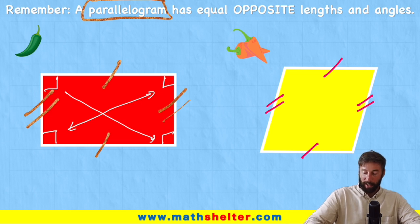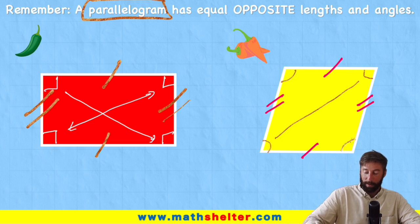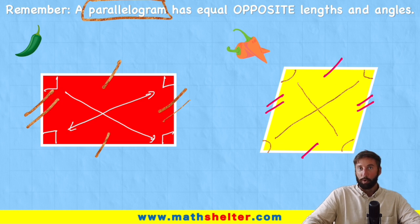But let's look at those angles again. I can see I've got a nice little acute angle here which is exactly the same as its opposite angle just there. And then this obtuse angle is the same as the opposite obtuse angle literally opposites it. So they're the rules.